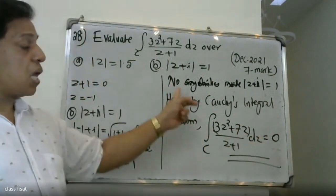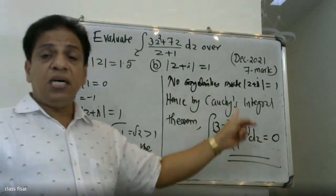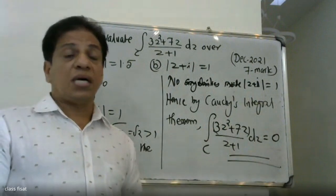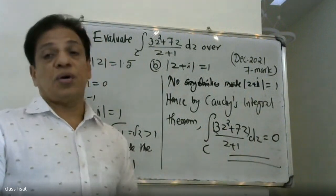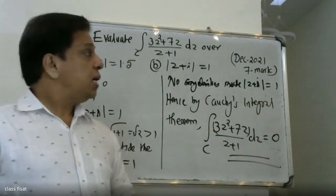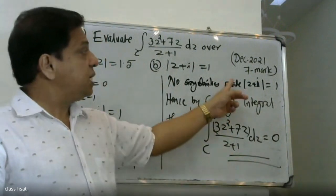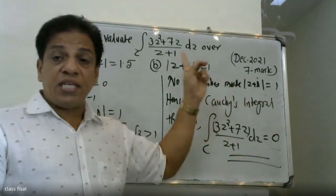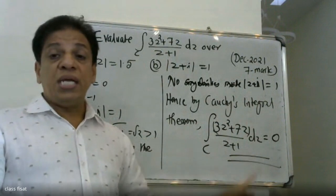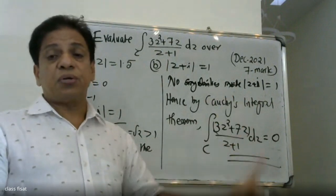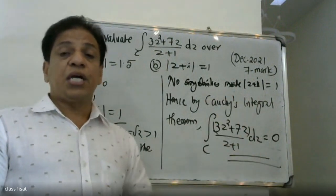The answer is equal to zero, since no singularity is inside |z+i| = 1. If you have any questions, this is the question and the solution is complete.